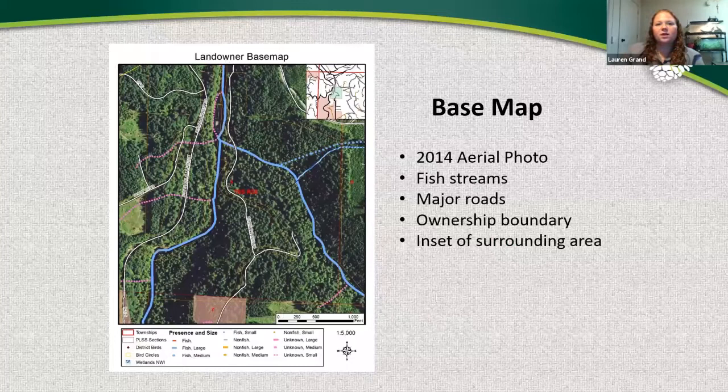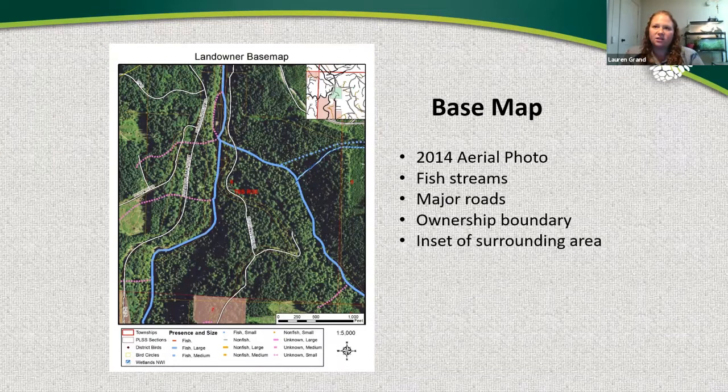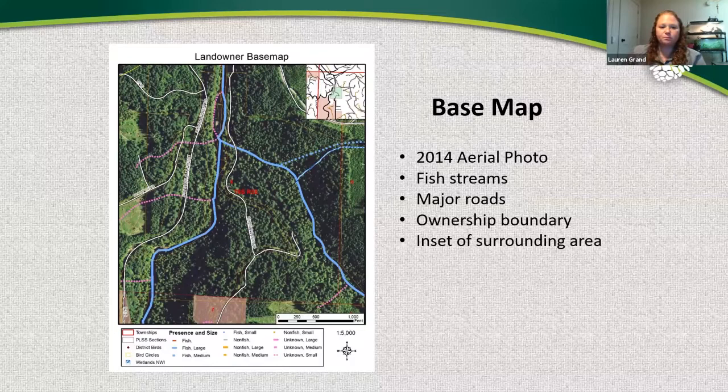One of the first and most common maps in a management plan is a base map — a map that includes the boundaries of your property typically over satellite imagery, giving you the context of your property within the landscape. It usually identifies features within the landscape such as major roads and streams, always has your ownership boundary outlined, and often includes legal section boundaries — all important information for your management plan.